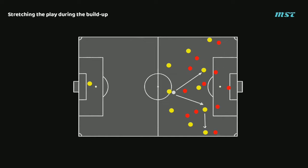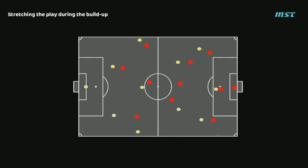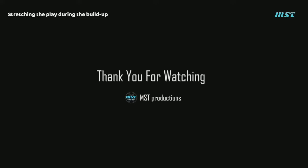This is done to aid the team in possession in several ways. Keeping different parts of the pitch increases the passing options for players with the ball. It becomes easier for the player to pick out a pass when one passing option is cut out by the opponent's players. It also increases the range of passing angles, therefore enabling the team in possession to find pockets of space.